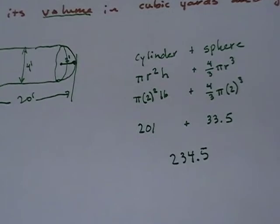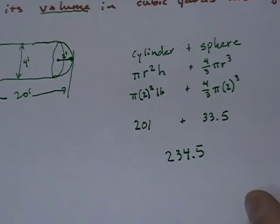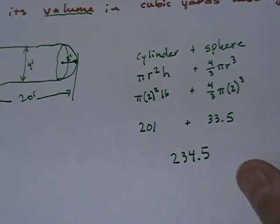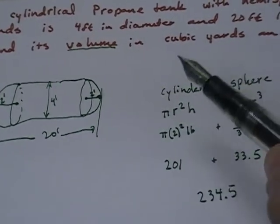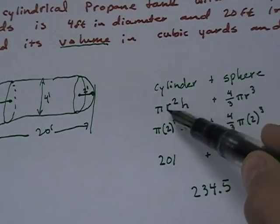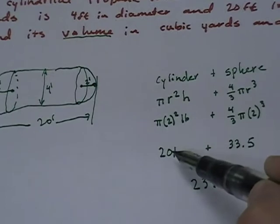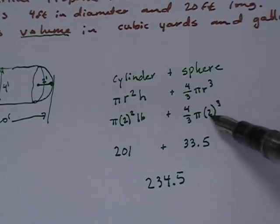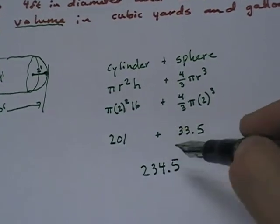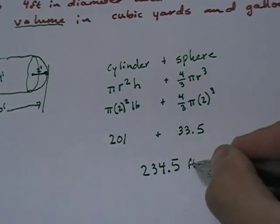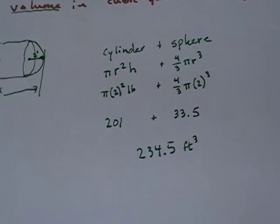Now, units are so important because it's not okay to just say my answer is 234.5. 234.5 what? So go back. Our units are all in feet. So here I have feet squared times feet, which will give me feet cubed. And here I have feet cubed, which will give me feet cubed. So feet cubed plus feet cubed. And I get feet cubed. Now, that is an answer.